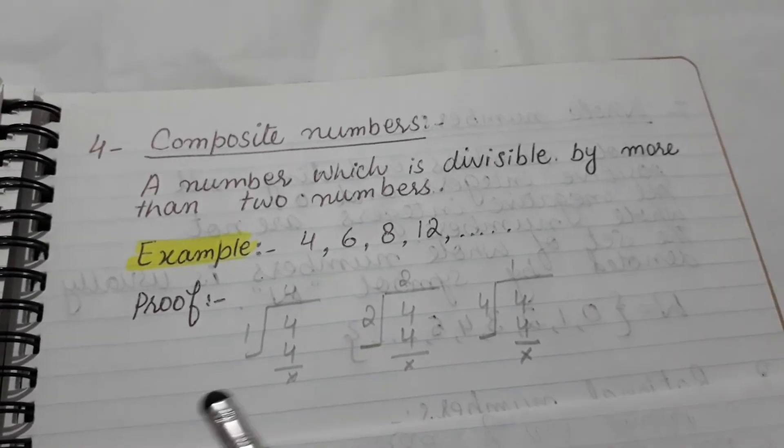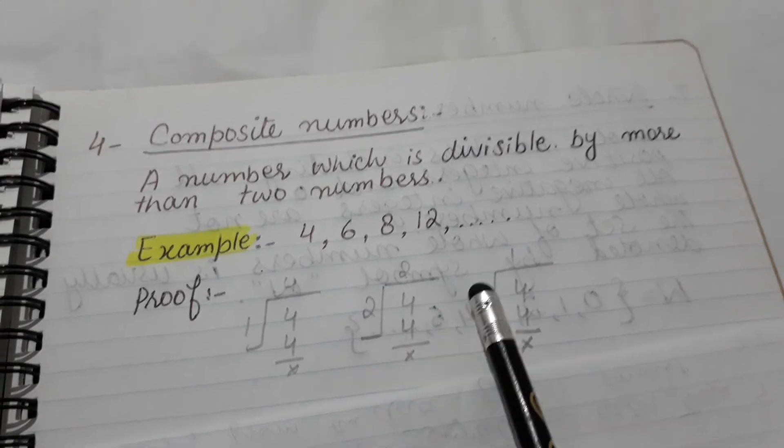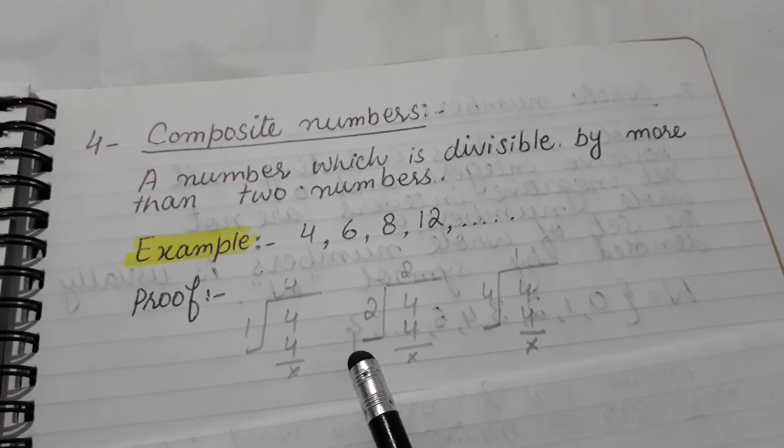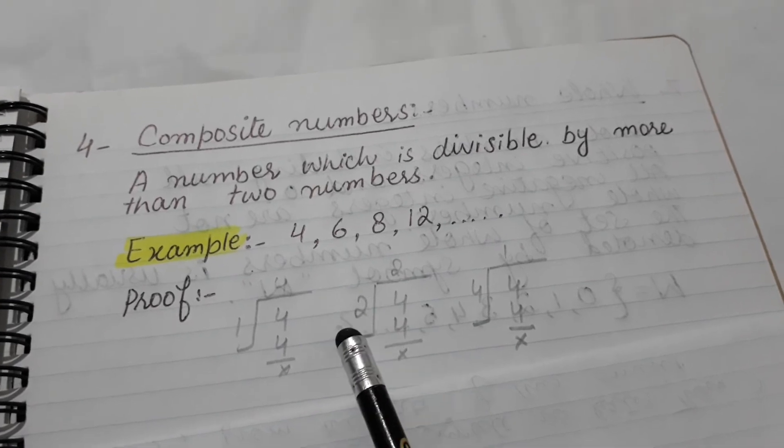So it proves that 4 is divided by more than two numbers, like 1, 2, 4. And that number which is divided by more than two numbers is composite numbers.